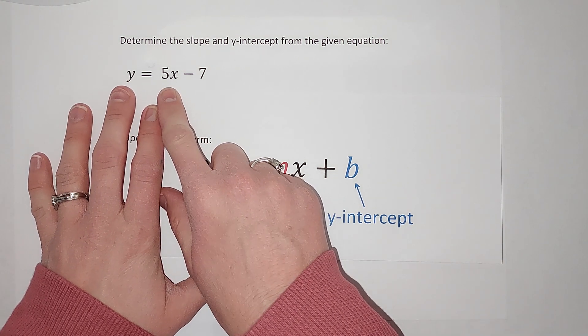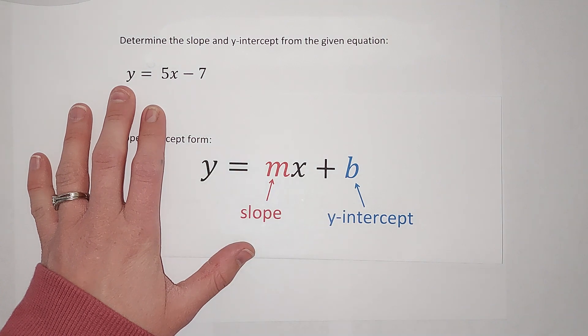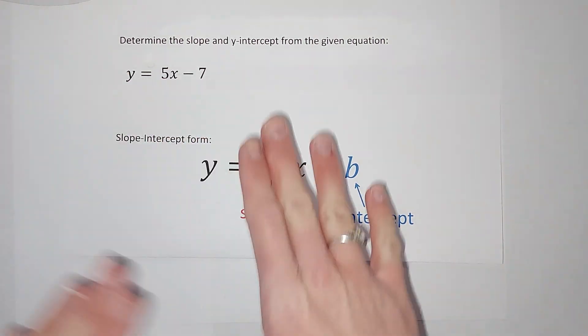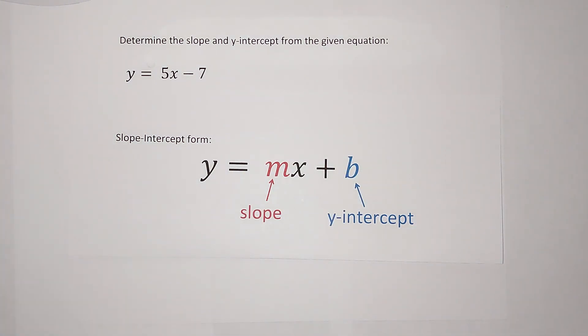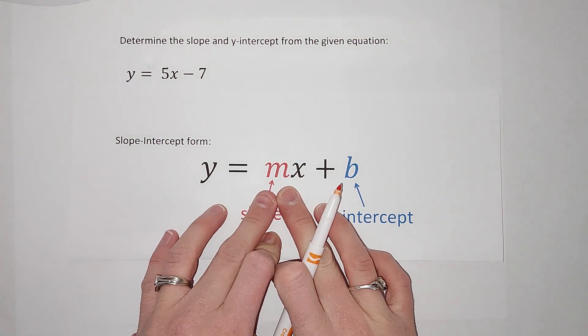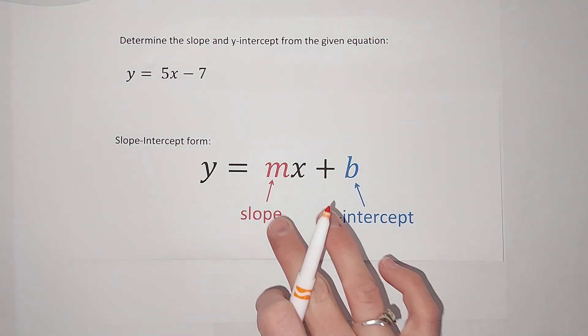So good news here, on this problem, y is already by itself. If the 7 were over here or something, we would add to both sides or do whatever we needed to do to get y alone. So now that y is alone, I have it all set up very nicely. When it looks like this, the number in front of my x, which a lot of times we call m, is my slope.